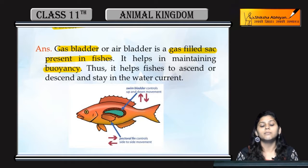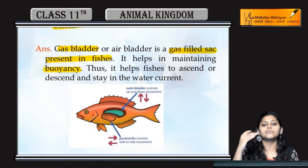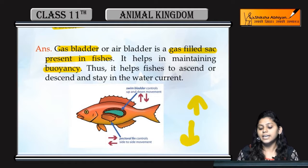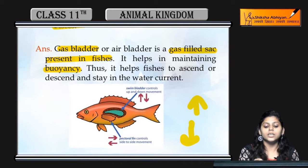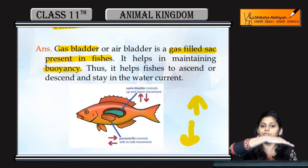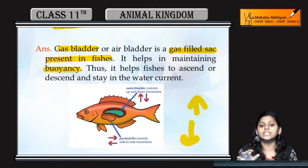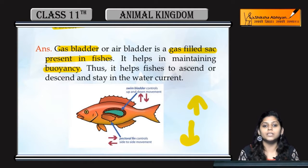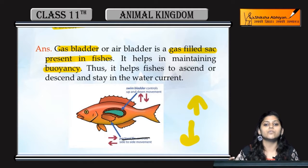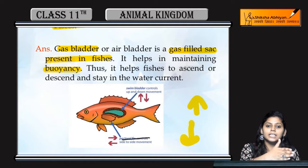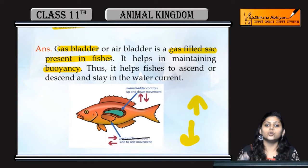They provide buoyancy. Buoyancy kya hootah hai? Upward force — upward force against the gravitational force. Yuh help kerti hai fish ko float karne mein. Aapne jo aisi direction dekhi hogi fishes ki, this is because of these air or gas bladders. Aap bolenge ki fish jo swim kerti hai woh uske pectoral fins se ya phir fins se woh float kerti hai, but actual mein jo fins ki movement hai woh aaghe jane ke liye hoti hai.